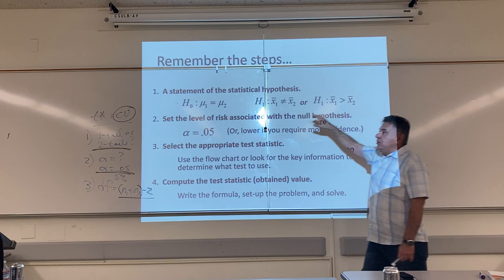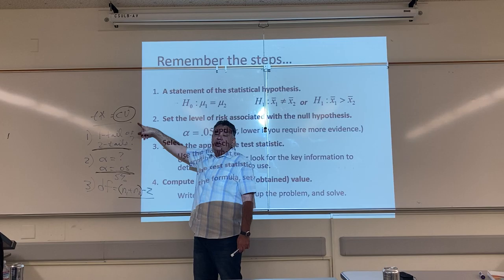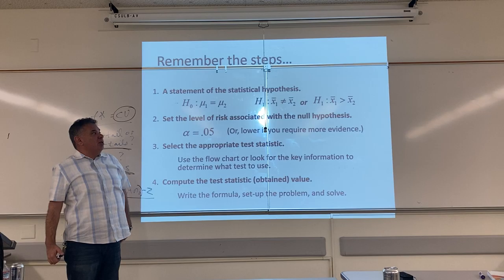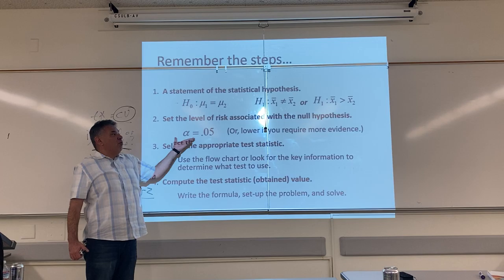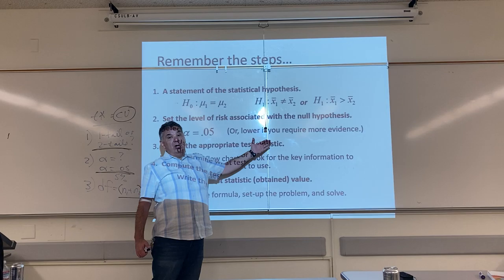Here's what we really need to understand. Are we dealing with a non-directional research hypothesis — are we looking for any difference? Or are we working with a directional research hypothesis, looking for a specific kind of difference? This is the first step we need to figure out in order to look up our critical values.